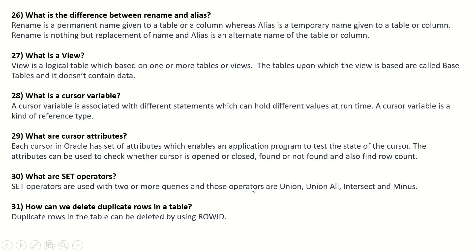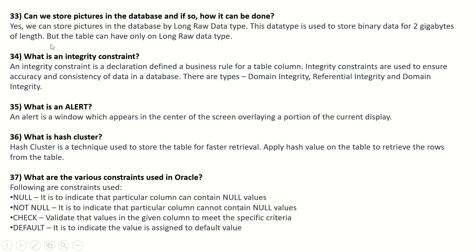What are set operators? Set operators are used with two or more queries. Those operators are UNION, UNION ALL, INTERSECT, and MINUS. How can we delete duplicate rows in a table? Duplicate rows can be deleted by using ROWID. Can we store pictures in the database? Yes, pictures can be stored using the LONG RAW data type, which stores binary data up to 2 gigabytes. However, a table can have only one LONG RAW column.